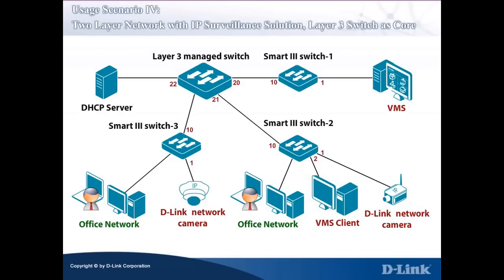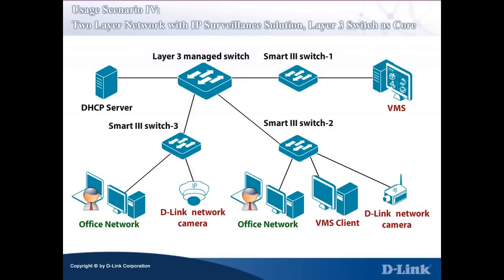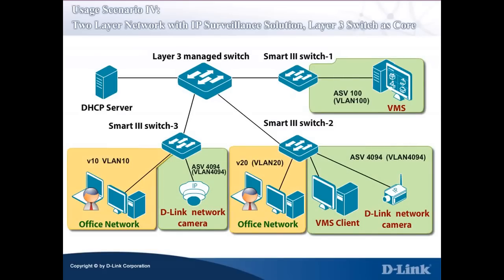Please note that the links between the Layer 3 managed switch and the Smart 3 switch are trunk lines with tagged ports because they have to carry multiple VLANs. The VMS server is connected to Smart 3 Switch 1, which is connected to the Layer 3 managed switch. The D-Link network cameras and the VMS clients are connected to Smart 3 Switches 2 and 3, which are then connected to the Layer 3 managed switch as well. In small and medium-sized business network environments with a Layer 3 Switch as the core switch, it's a common practice to plan VLANs for different functional groups.